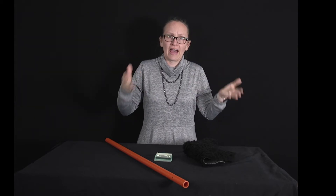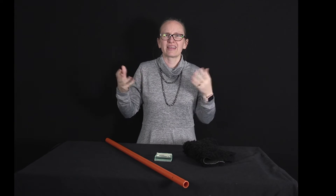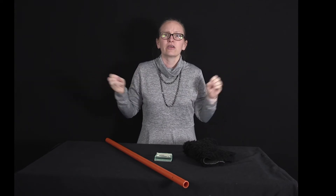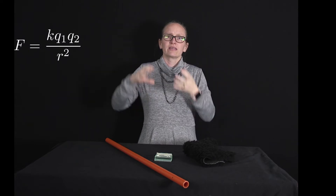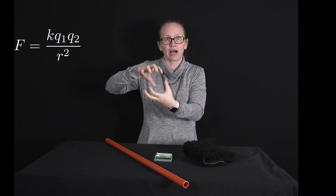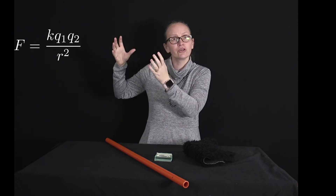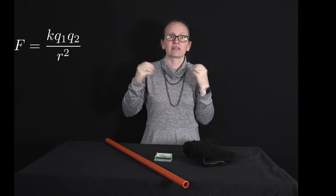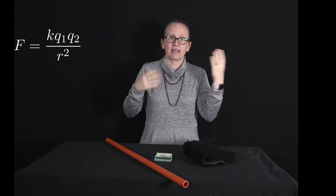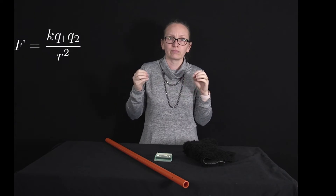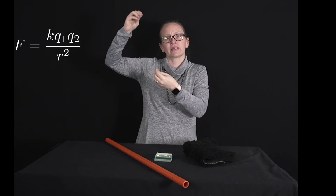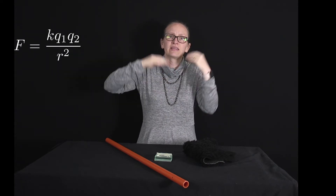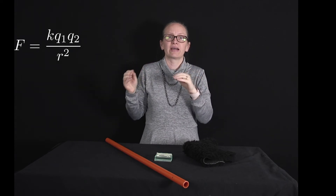Different atoms can lose and gain electrons with a different amount of ease. This fundamentally comes down to Coulomb's law: F = k·q₁·q₂ / r². If we have a really large nuclear charge, then we've got a really large q in one of those terms, and so we need a lot more force to remove the electrons from that atom. Also, if the electrons are on average a long way from the nucleus compared to another atom, then r is much larger and the force required is smaller.